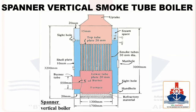It is claimed that these swirl flow tubes are more efficient than normal plain smoke tubes, in that they cause the gases passing through to swirl, coming into more contact with the tube wall and therefore increasing the rate of heat transfer.